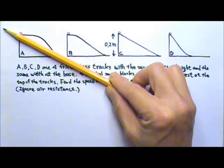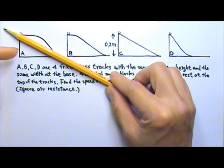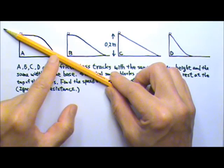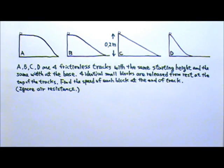If the frictionless track is just a straight incline, then we can draw the force diagram and figure out the acceleration. Since the acceleration is constant, we can use kinematics to find the final speed at the bottom. But even in this case, conservation of energy will still be easier.